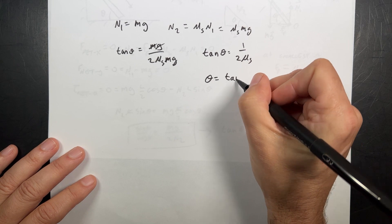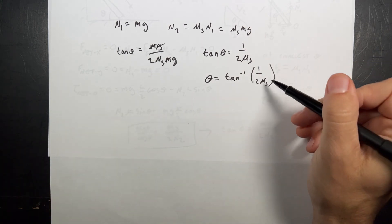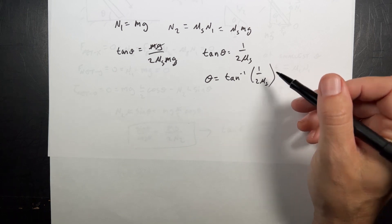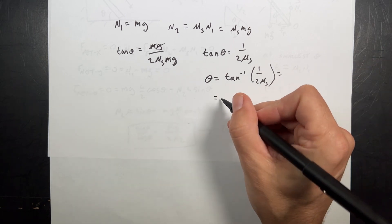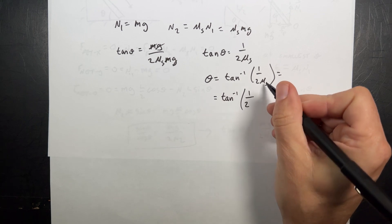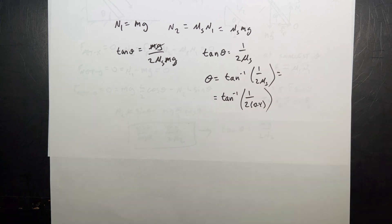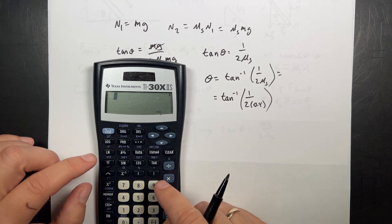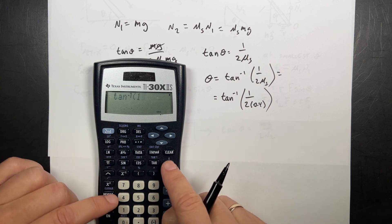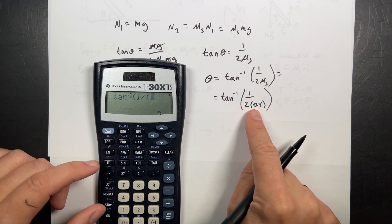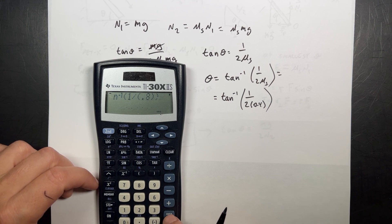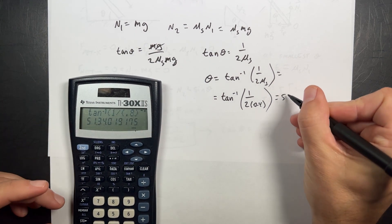Note that mu has no units, which is good — you can't take the inverse tangent of something with units. Plugging in our values: theta equals arctan(1 / (2 times 0.4)) equals arctan(1/0.8). Using a calculator in degrees mode, that gives 51.3 degrees. That's the minimum angle at which the ladder won't slip.